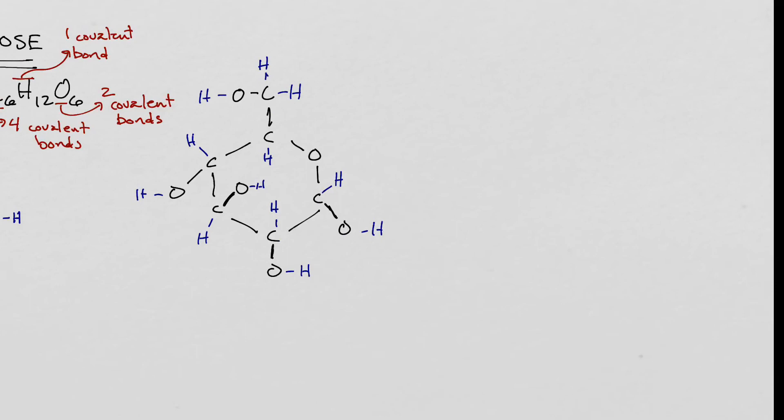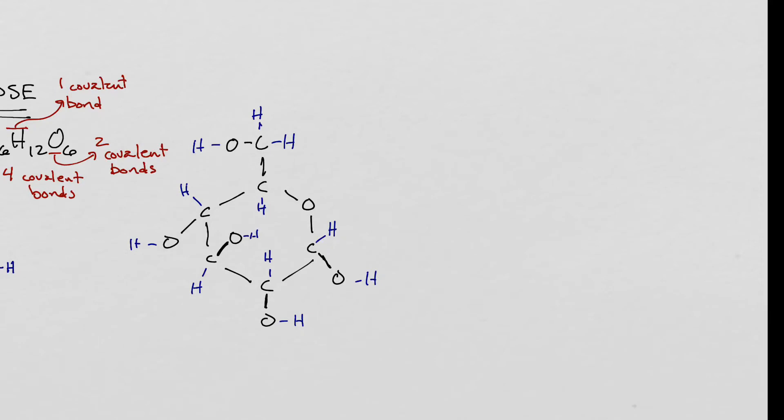So, the other molecule that we need to be able to draw is ribose. Ribose is a five-carbon sugar. Its formula is C5H10O5. Notice how the carbon and oxygens are always the same and the hydrogen is double what the oxygen is.